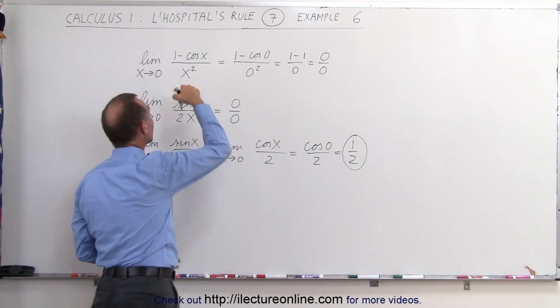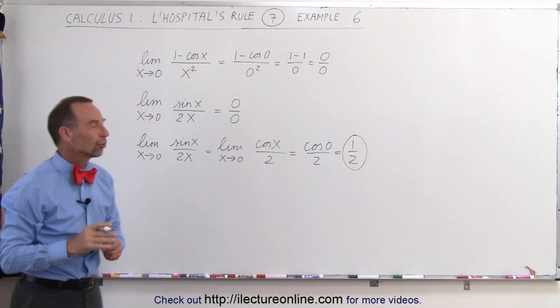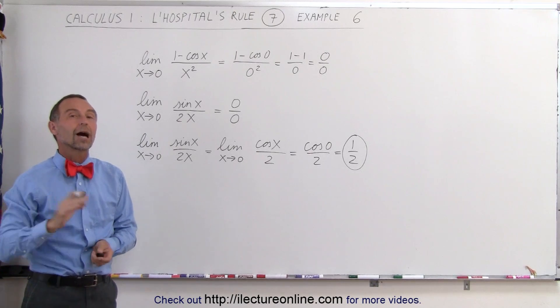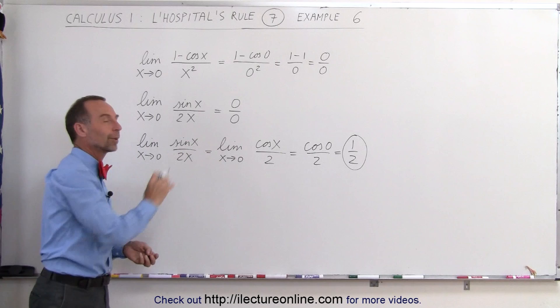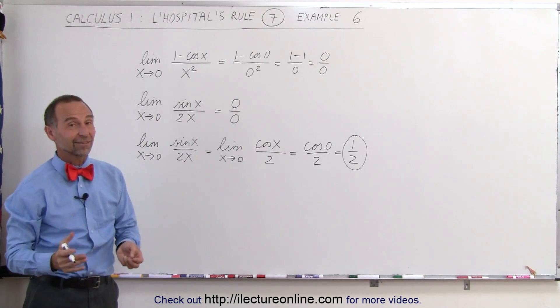And there's the limit to the original problem when we allow x to go to 0. Here it required us to take L'Hôpital's rule twice before we end up in the form of the equation where we can actually plug in the limit. And that's how we do that.